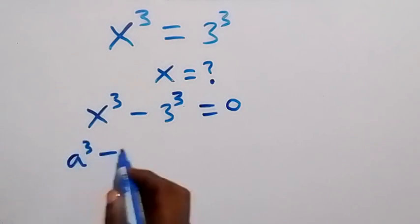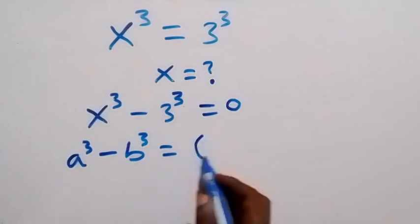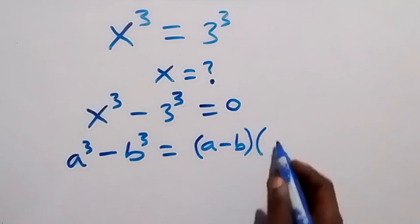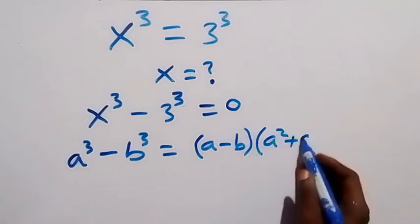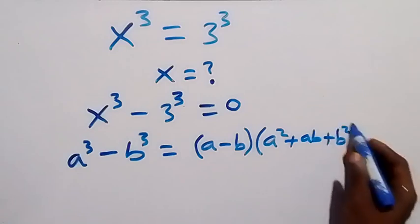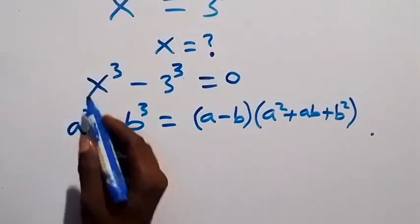that is when we have a³ minus b³, and this is going to be (a - b) times (a² + ab + b²). So when we apply this here now, so we can write this as: